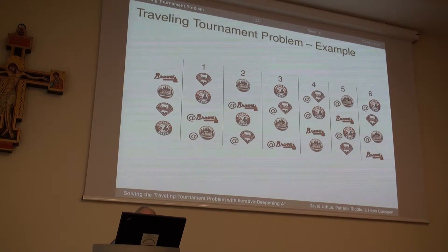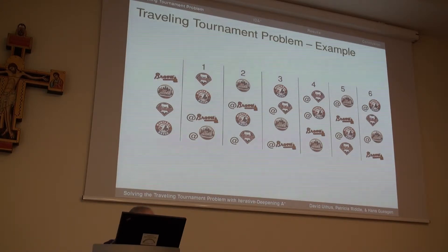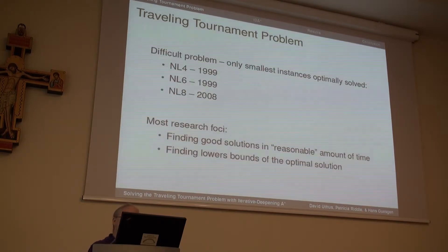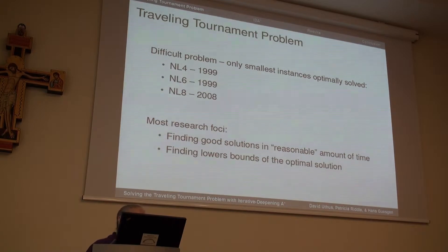With four teams you have six time slots, and each of those time slots is basically a Traveling Salesman Problem. Each of these TSPs has to be coordinated — if the Mets play the Montreal Expos at time one, then the Montreal Expos must be playing the Mets at time one. It's just one Traveling Tournament Problem, and because of this it's a very difficult problem. It was first worked on around 1999 with four teams, and by 2008, roughly ten years later, they had only gotten up to eight teams.